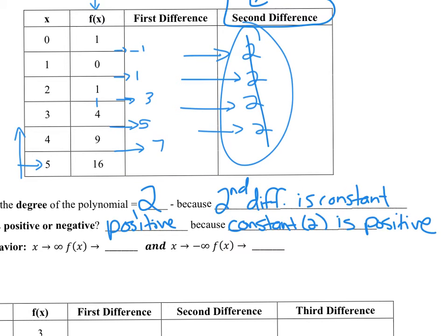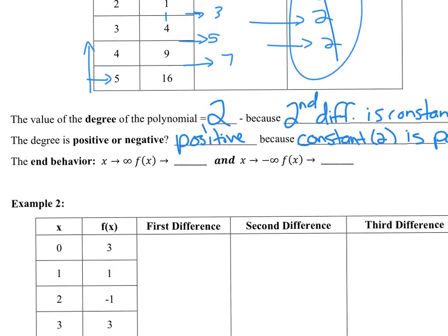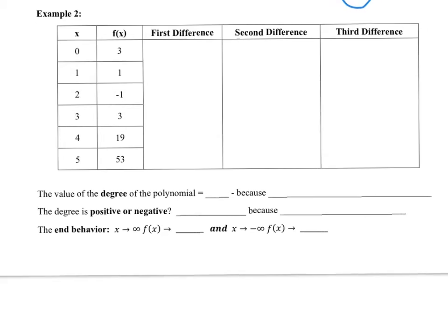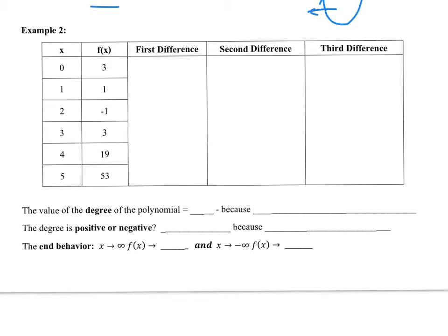Now that we know the degree and whether the leading coefficient is positive or negative, we can find the end behavior. Since this is an even degree and the leading coefficient is positive, we know the graph looks like a U-shape. As x goes to positive infinity, f(x) goes to positive infinity, and as x goes to negative infinity, f(x) also goes to positive infinity. That's how you do it. You can pause and try the next one on your own, or do another one with me.